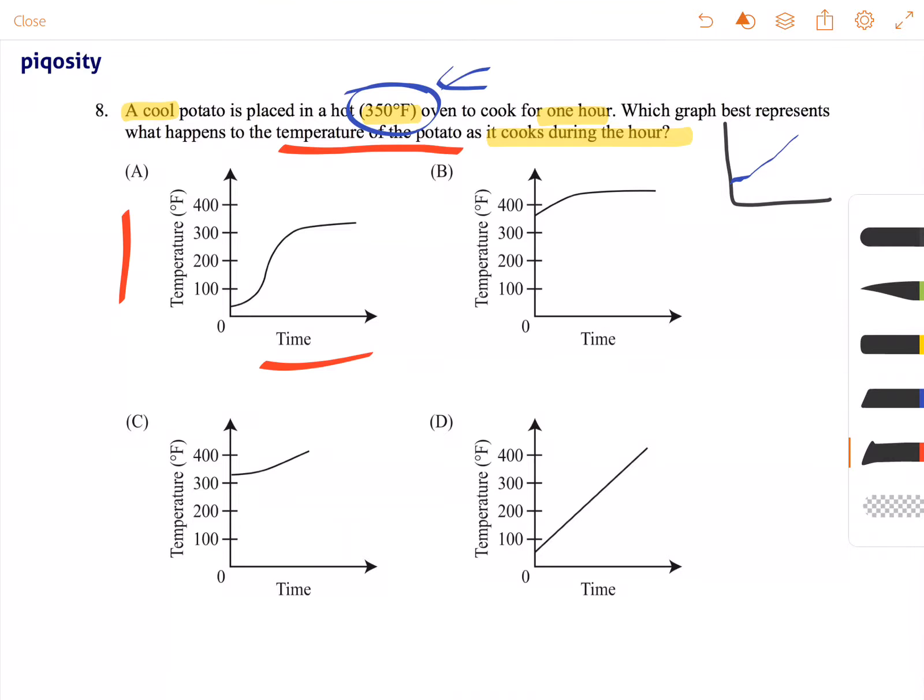If you look at answer choice A to start, it starts below 100 degrees, so that definitely seems like a cool potato, and then goes up. It doesn't go up into this 400 region. It looks like it's going to stay closer to about 350 degrees. So A is definitely in the running.